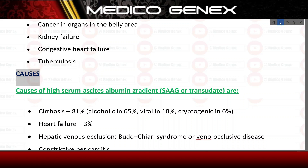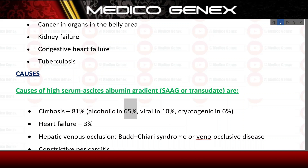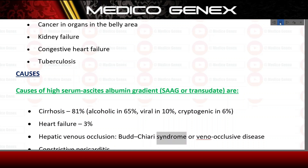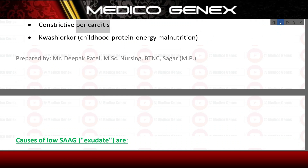Causes. Causes of high serum ascites albumin gradient (SAAG), or transudate, are: cirrhosis 81% — alcoholic 65%, viral 10%, cryptogenic 6%; heart failure 3%; hepatic venous occlusion — Budd-Chiari syndrome or veno-occlusive disease; constrictive pericarditis.